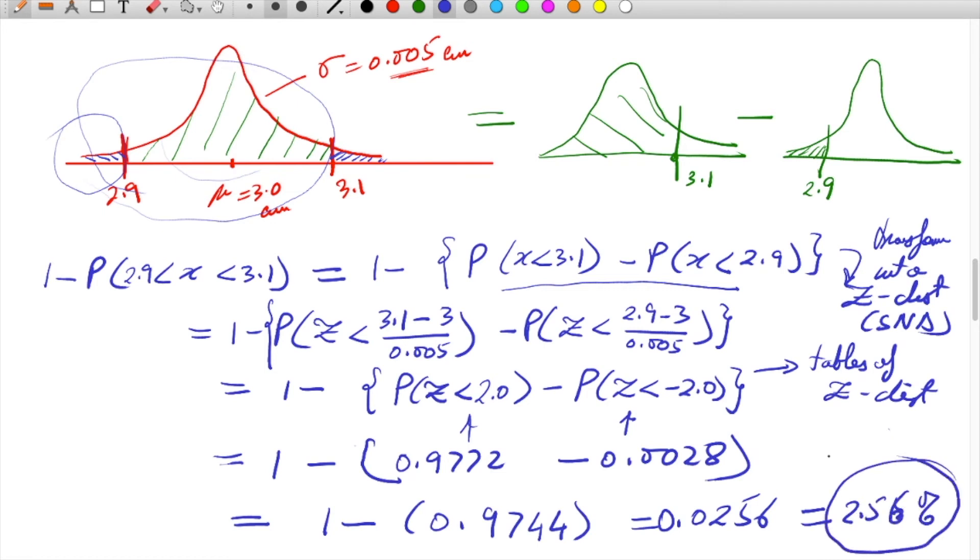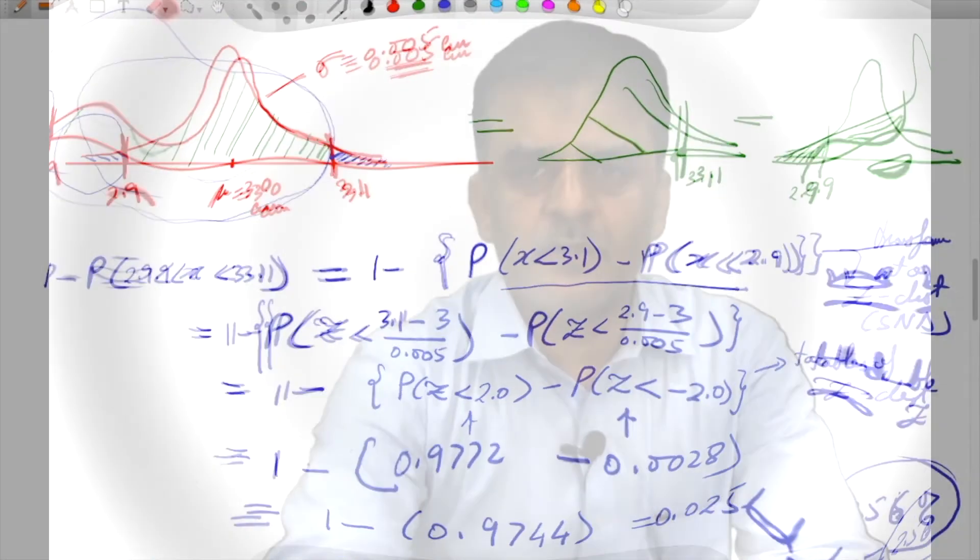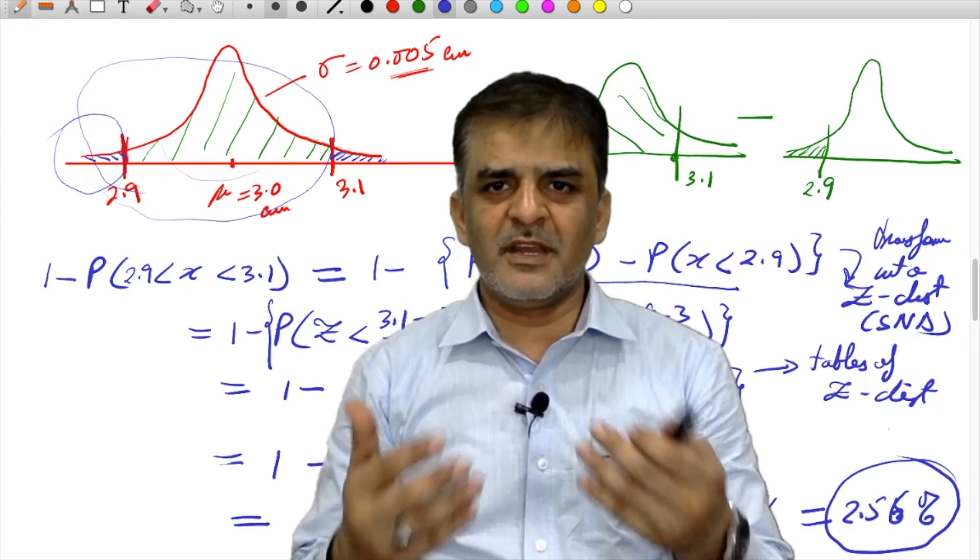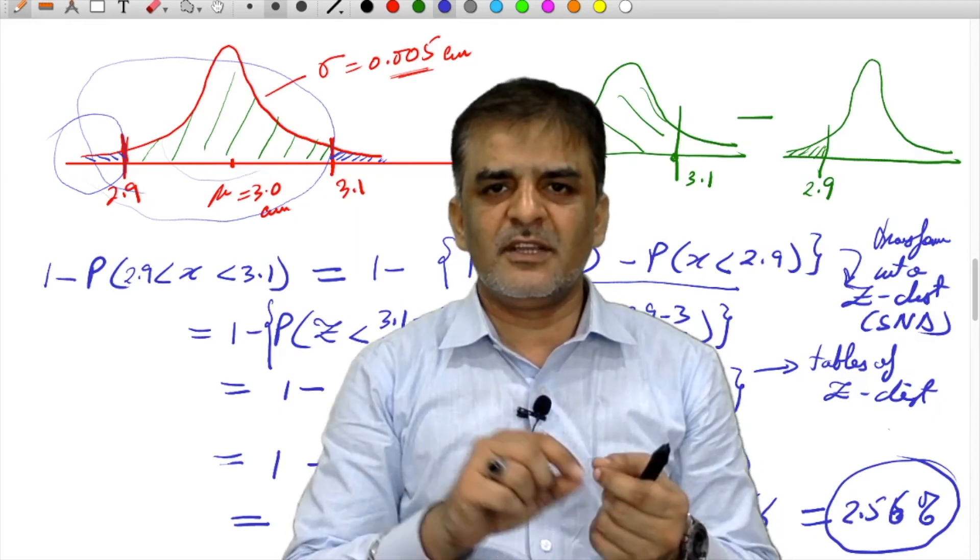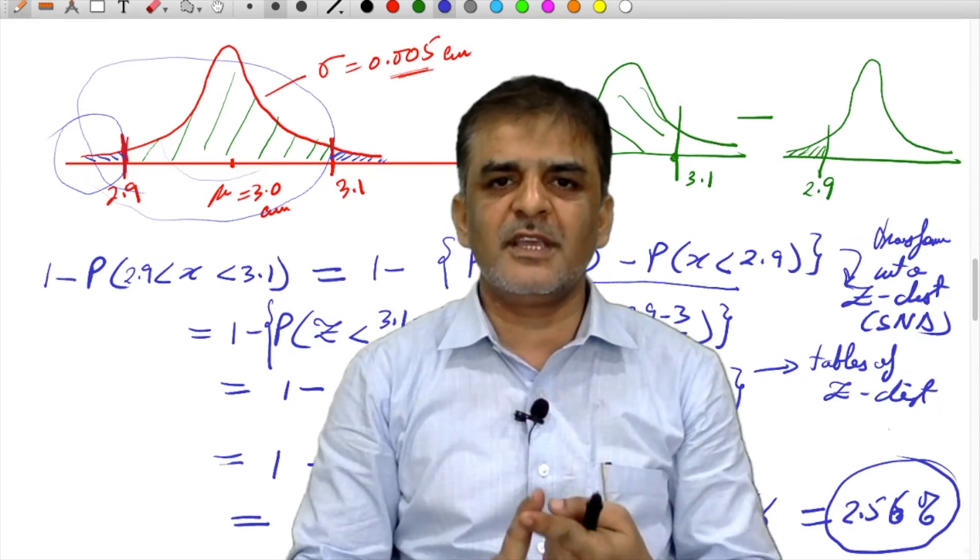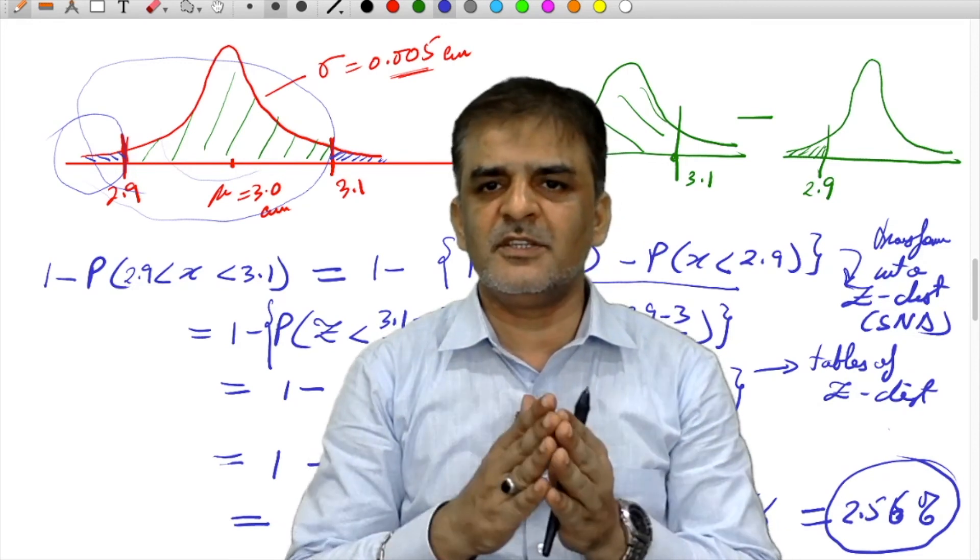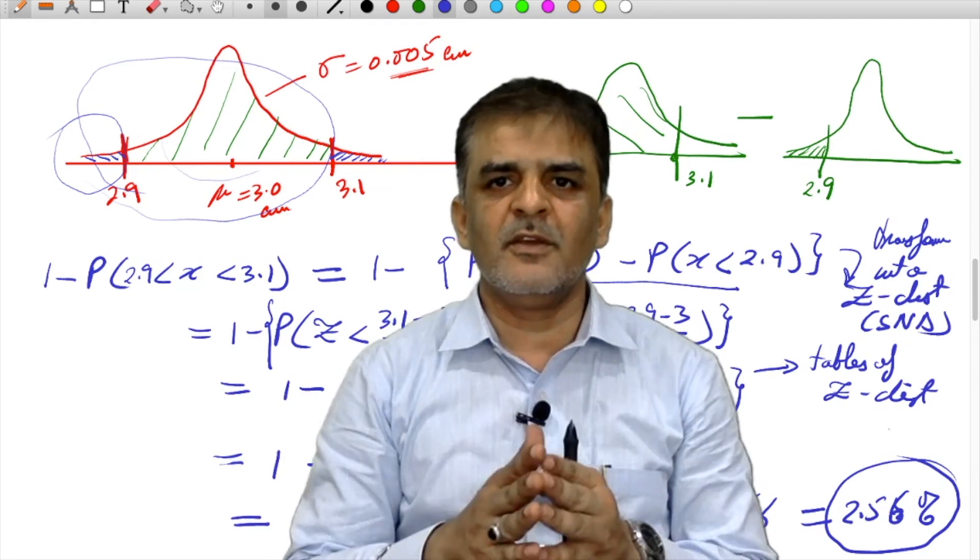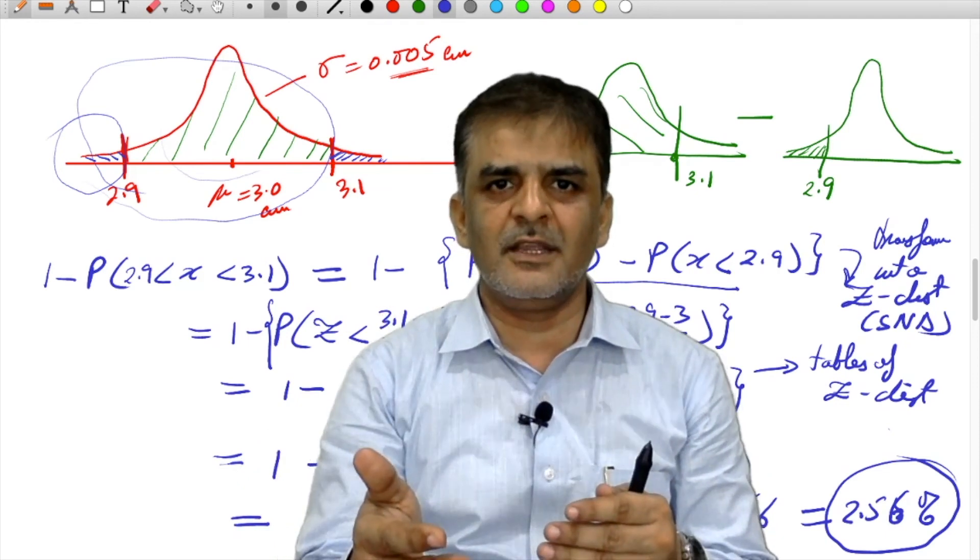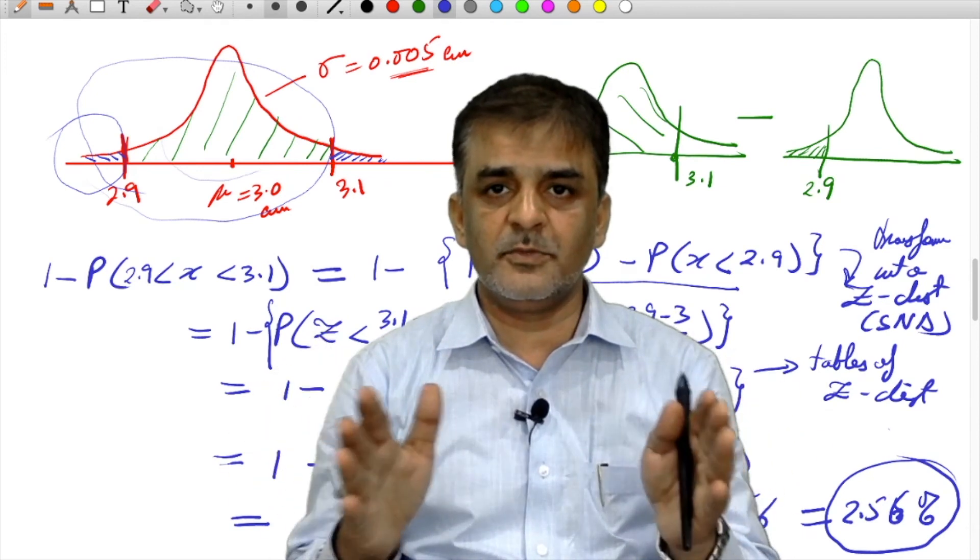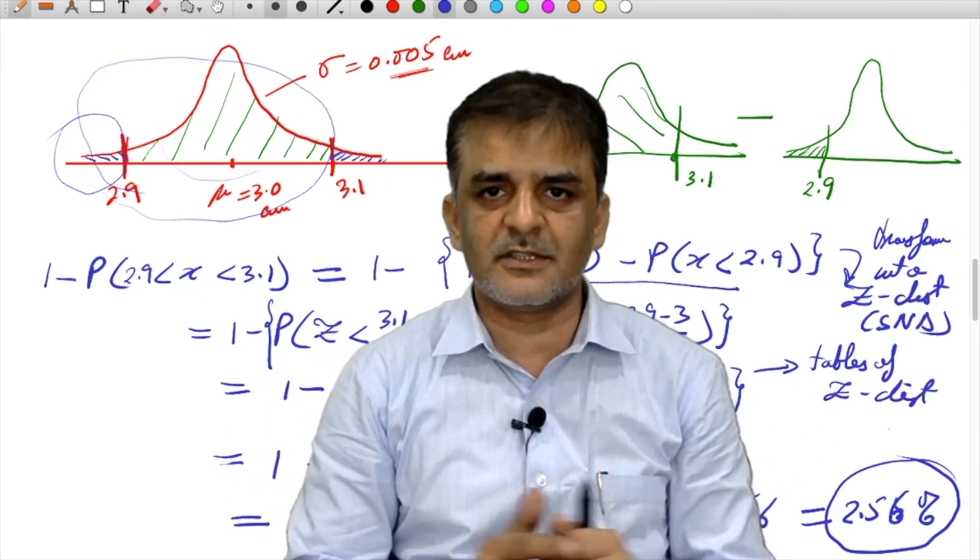In this problem we are able to solve using normal distribution. But the first thing is to check the normal distribution conditions: whether the distribution is symmetrical, whether the mean, mode, and median are equal, and whether the probability distribution approximately matches the defined function.